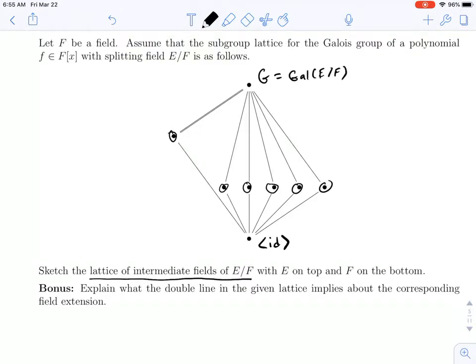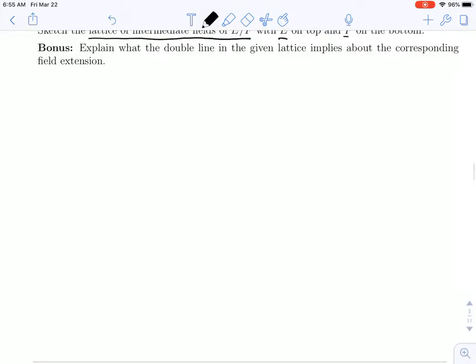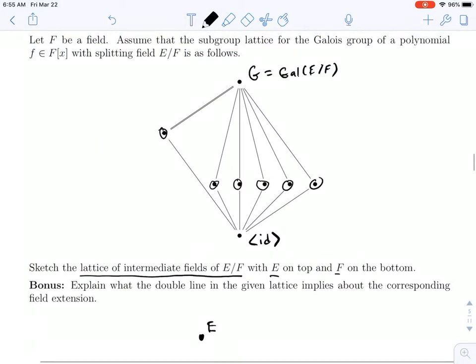And when we sketch it, we want to put E on top and F on the bottom. So using the fundamental theorem of Galois theory, we know that this diagram is going to look just like this diagram, but flipped.